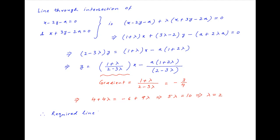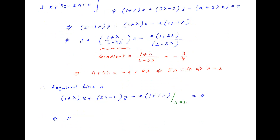The equation of the required line can therefore be written as 1 plus lambda times x plus 3 lambda minus 2 times y minus a times 1 plus 2 lambda is equal to 0, where lambda is equal to 2. Therefore, the required equation is 3x plus 4y is equal to 5a.